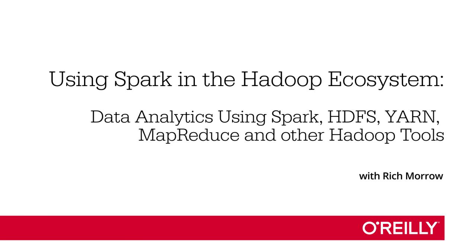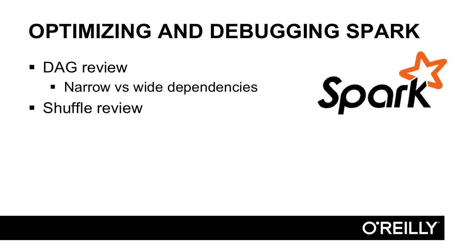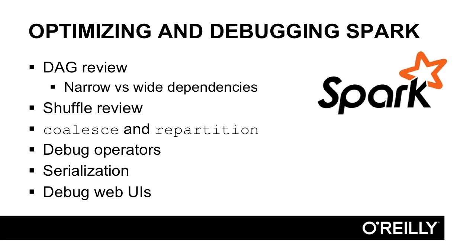In this chapter, we're really going to dig down to the weeds, talking about optimizing and debugging Spark. This is where things really get interesting. We'll do a quick review of our DAG or directed-acyclic graph. We'll talk especially about narrow versus wide dependencies, which have huge performance impacts. We'll talk about shuffling, what that is, and how to avoid it. We'll specifically look at the coalesce and repartition methods, some debug operators, serialization, and then wrap up with a quick discussion of the debug web UIs.